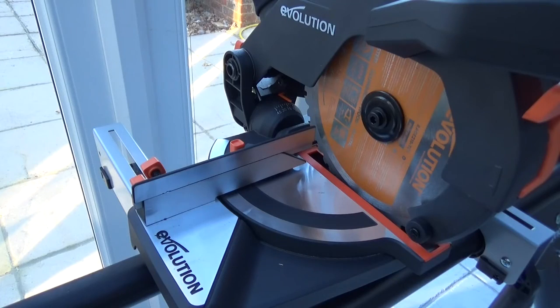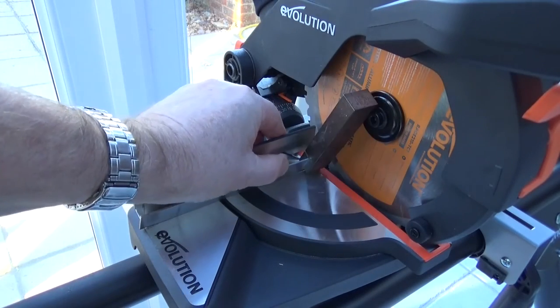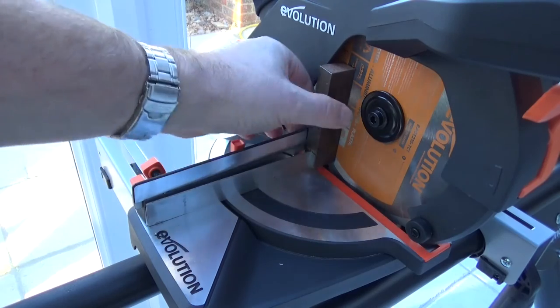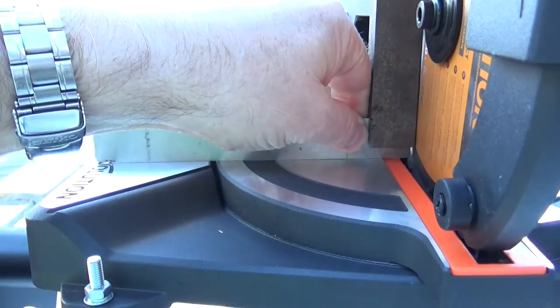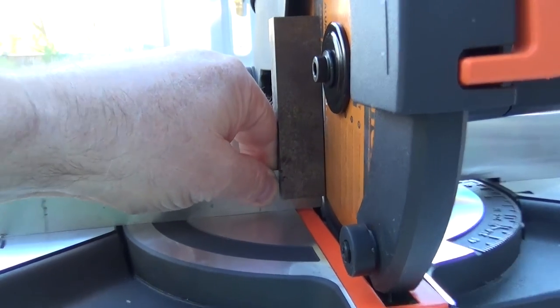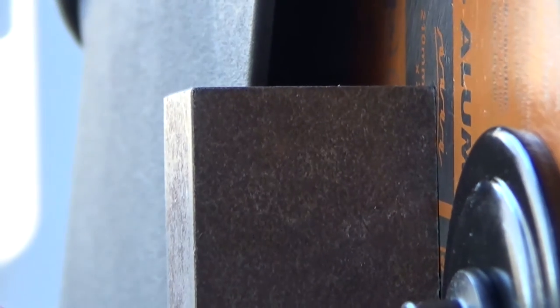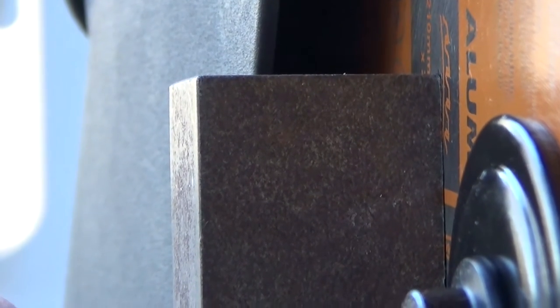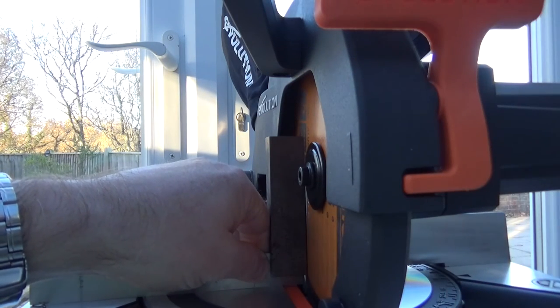The next thing I want to do is make sure the blade is perpendicular to the table. It's the same principle as we did with the fence. Make sure it's flat on the base, push it up against the blade. If I zoom in you'll see we've got a gap at the bottom and it's touching the blade at the top, so I need to tilt the blade that way to get that square.